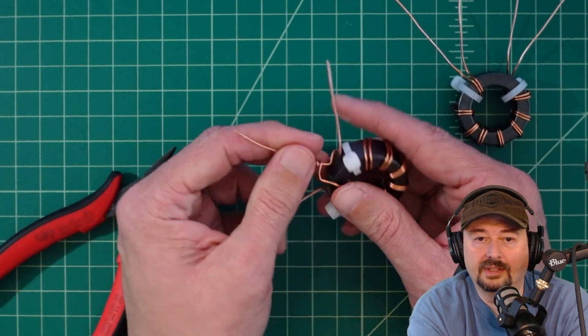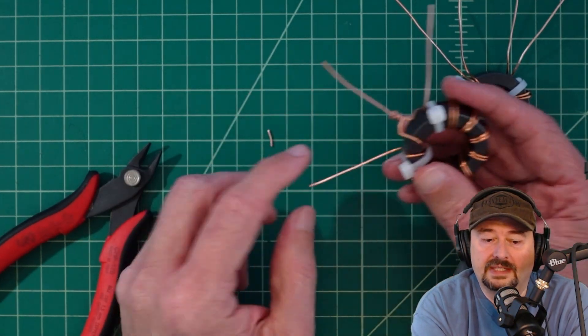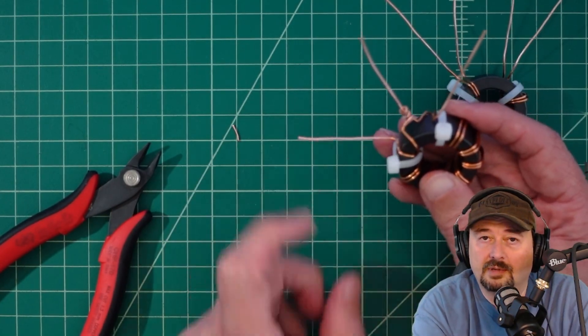There we go, it's a little tighter on there. I'm going to do that to the second core and then I'm going to hit this with a little bit of solder. We'll be right back.